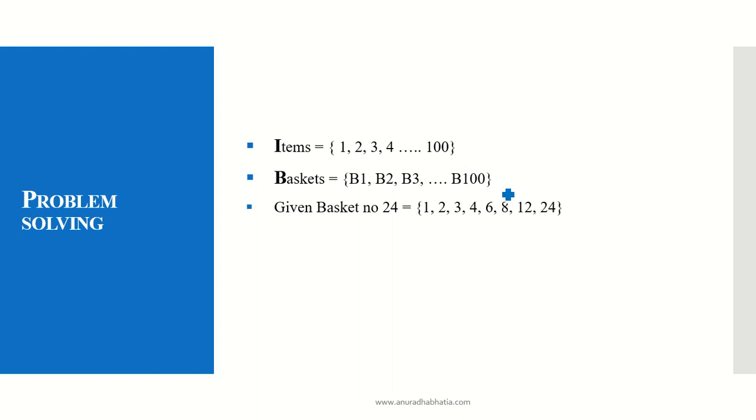Given basket number 24 has the elements 1, 2, 3, 4, 6, 8, 12 and 24. What is support? Support for any element A is occurrence of A in every basket. And the confidence for A in that basket is support A union B divided by support of A.